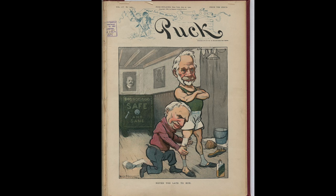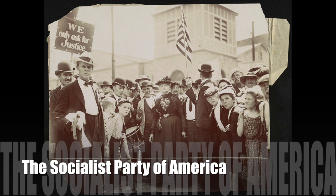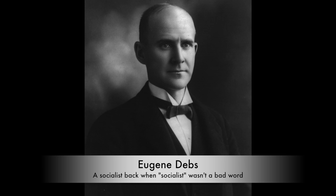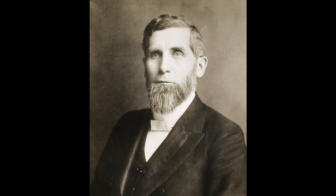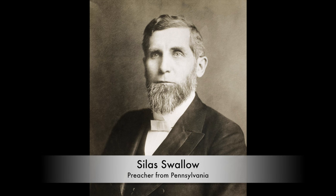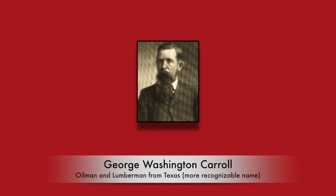At 80 years old, Davis was the oldest major party candidate ever to be nominated for national office. I will mention two third parties for this election. A new political party called the Socialist Party of America nominated Eugene Debs, a well-known socialist. Debs had run and lost in 1900, but his support seemed to be growing. The Socialist Party nominated Ben Hanford, a printer based out of New York, as his running mate. The Prohibition Party also nominated Silas Swallow, a Methodist preacher from Pennsylvania, with George Washington Carroll, a Texas oilman and lumberman, as his running mate.